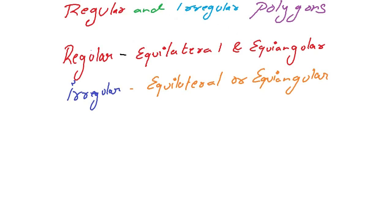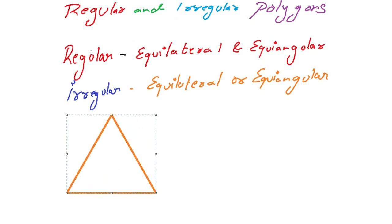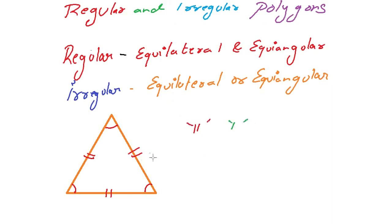Now let us see examples. Let us consider a triangle. If all three angles for this triangle are equal, and all three sides are also equal — marked with single dash symbols to show sides are equal — then this triangle is equilateral and equiangular. Therefore, this triangle is said to be a regular polygon.